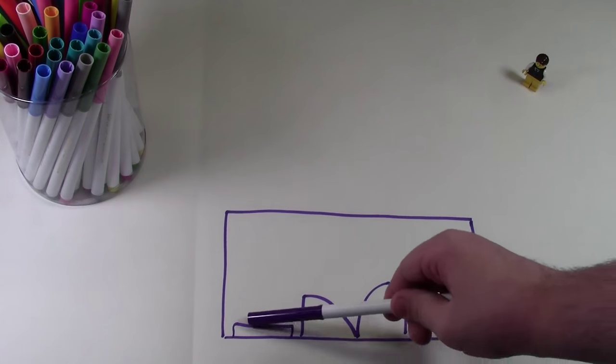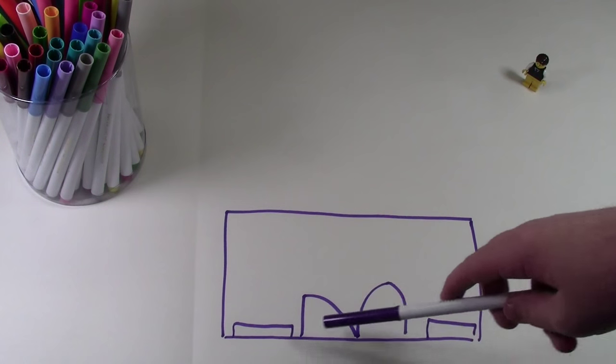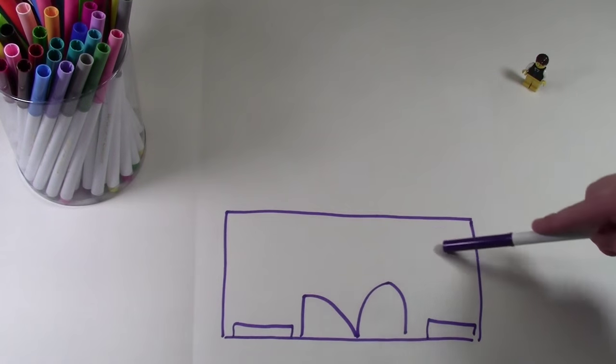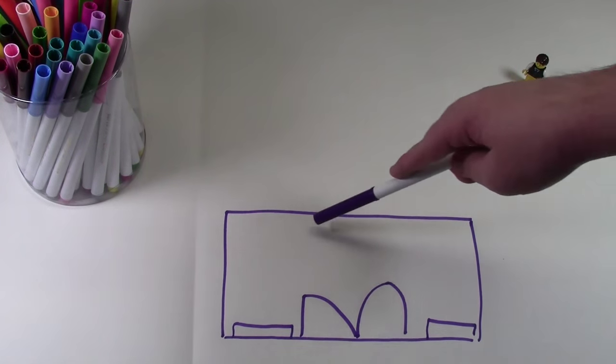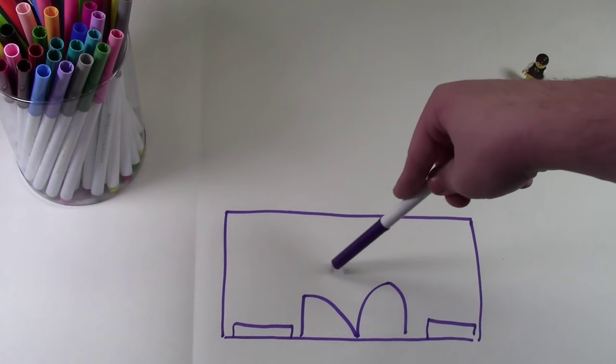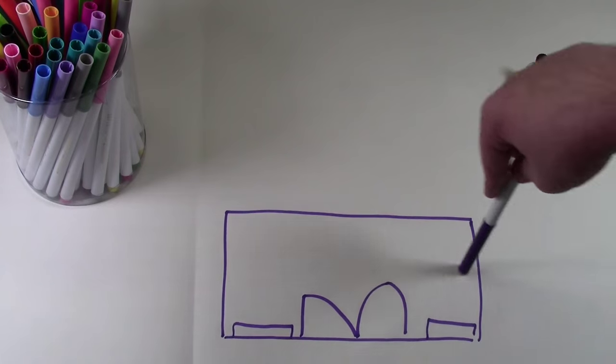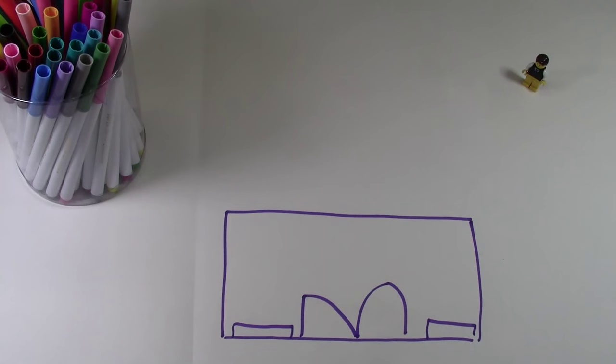Right here would be two double glass doors, and then on each side here would be big glass windows where I could display LEGO models. This whole area would be a huge store. I'd have the cash register here, more doors there for something in the future, LEGO sets lining these walls, LEGO sets in the center, LEGO sets practically everywhere.